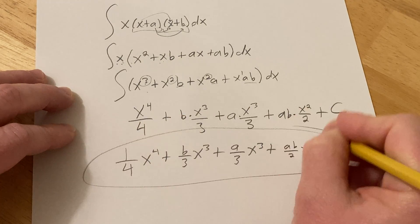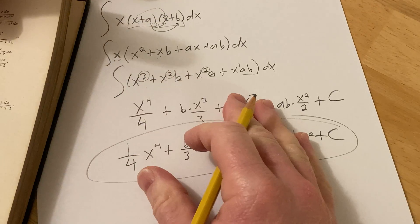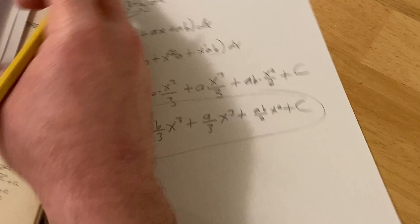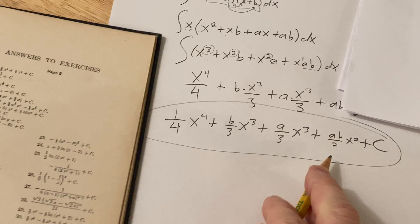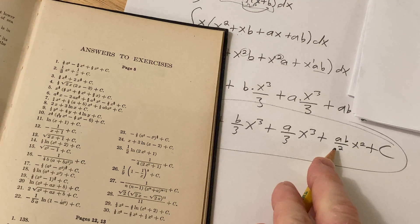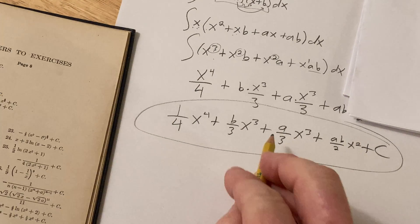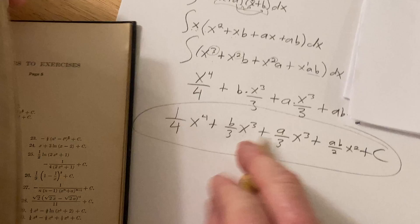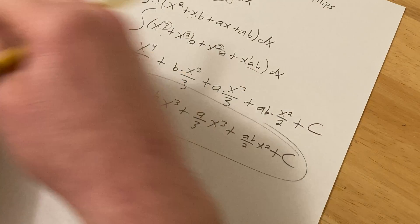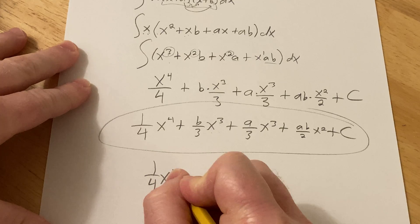And that should be the answer. I'm going to check the answer, because I actually have it here — this was number 7 in the book. I'm just going to compare it to this one. Yeah, it looks like the only thing they did here is they combined these two x cubed terms.